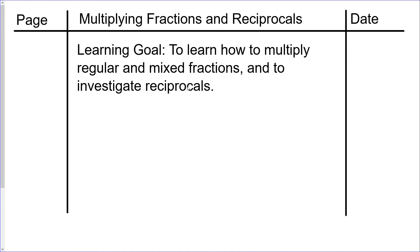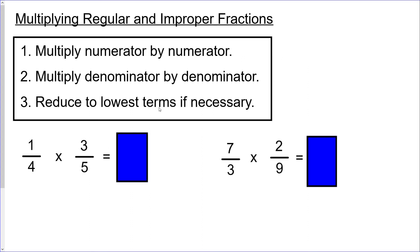So the learning goal is we're learning how to multiply regular and mixed fractions, and we're going to investigate something called reciprocals. Multiplying regular and improper fractions uses the same general steps. You multiply the numerator by the numerator, so top times top, multiply denominator by denominator, bottom times bottom, and reduce to lowest terms if necessary. So we do 1 times 3 which gets us 3, 4 times 5 gets us 20. That's it, done. This is a little bit easier generally speaking than the adding and subtracting of fractions.